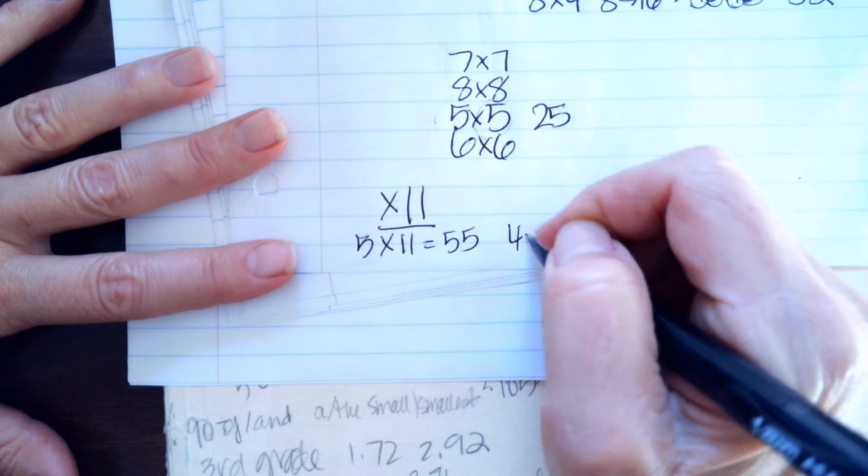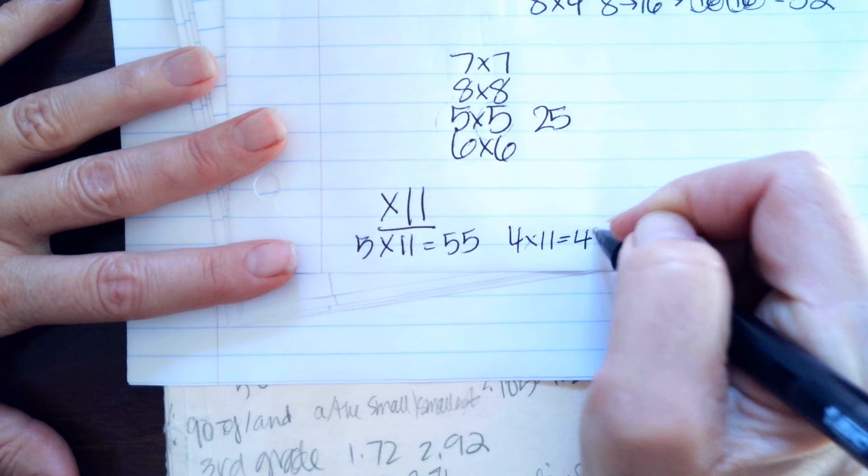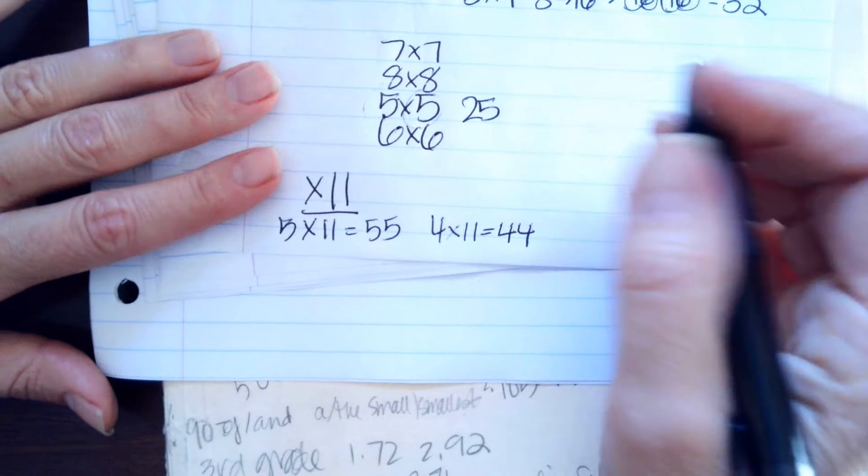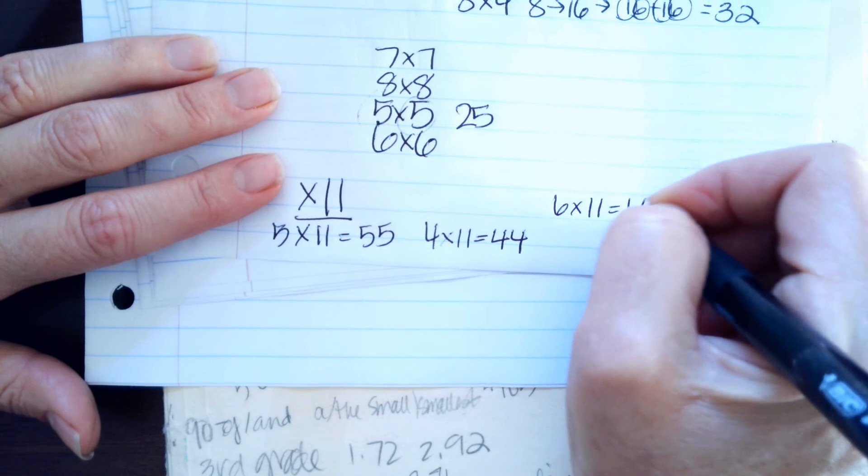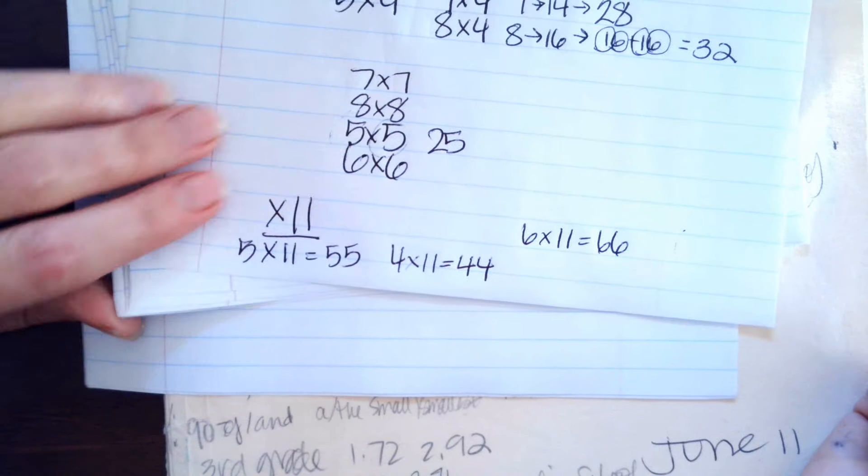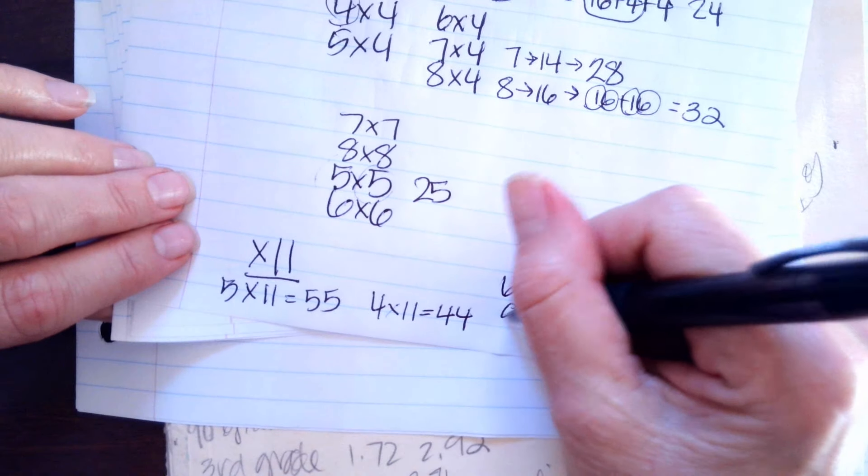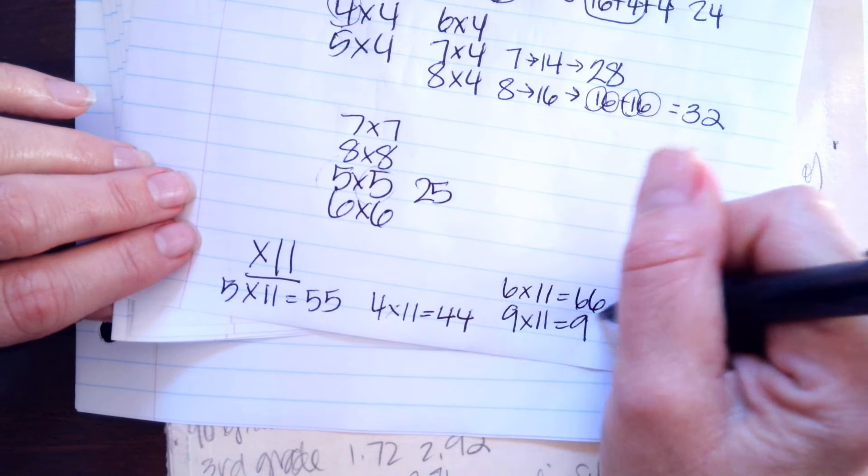4 times 11, I'm going to write the number two times, 44. 6 times 11, I'm going to write the number two times, 66. 9 times 11, you're going to write the number two times, 99.